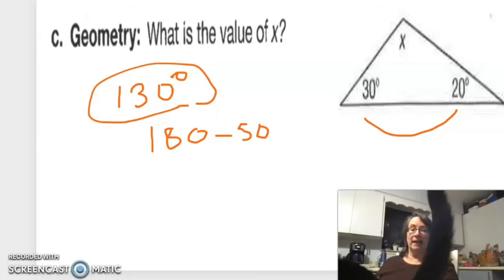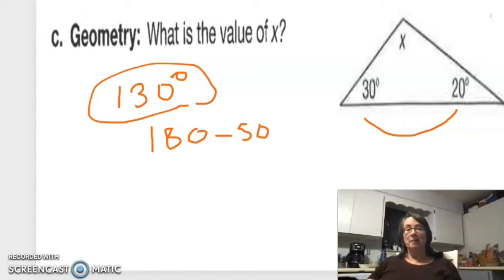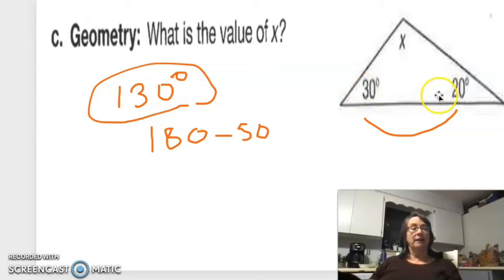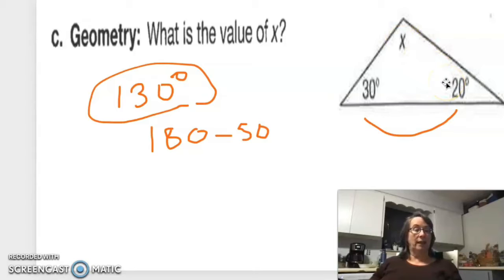What is the value of X? Well, we know that 50 degrees are already accounted for and we have 180 degrees in a complete triangle, so 180 minus 50 is 130.